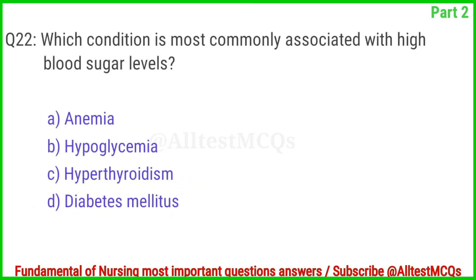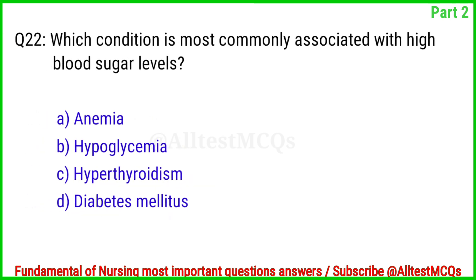Question No. 22. Which condition is most commonly associated with high blood sugar levels? The right answer is Option D: Diabetes mellitus.